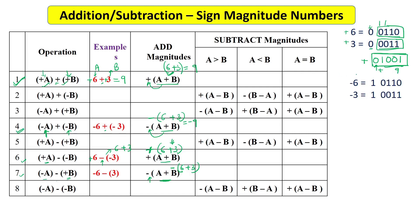Similarly, for minus six plus minus three, the magnitudes are the same — 0110 and 0011. We add them the same way to get magnitude 1001, which is nine. But the result sign is minus, so we prepend 1. The final answer is 11001, representing minus nine. For cases six and seven, you can verify yourself since they follow the same pattern as cases one and four.